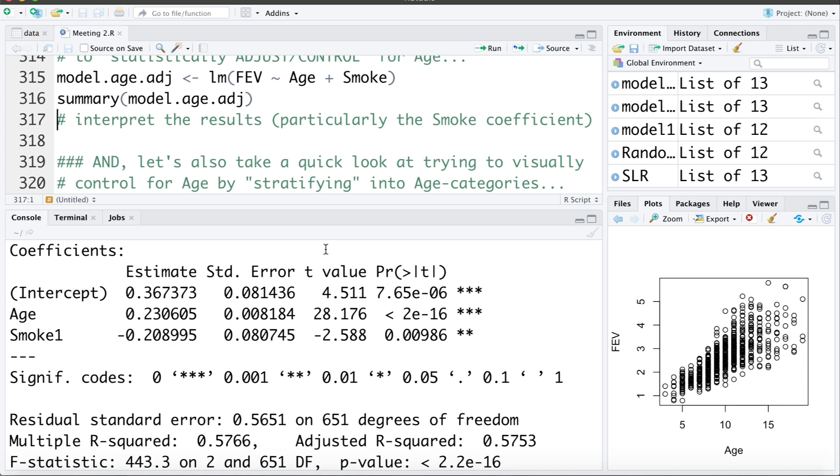So the interpretation of this would be that someone who smokes would expect the mean lung capacity to be 0.21 liters lower than a non-smoker when we adjust for age. Or phrasing that in a different way, if we take two people who are the same age, on average we would expect the smoker's lung capacity to be 0.21 liters lower than the non-smoker.